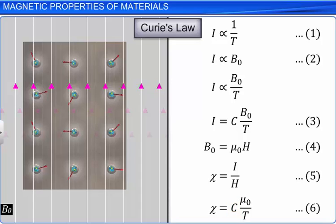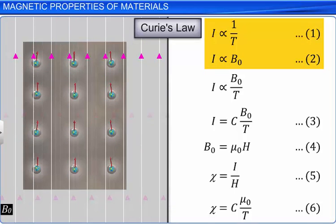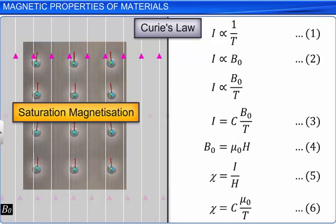Thus, the magnetic susceptibility chi depends on the nature and the temperature of the material. Since the magnetization of a material is directly proportional to the applied magnetic field induction and inversely proportional to its absolute temperature, the magnetization of a material increases up to a certain level by increasing the magnetic field and decreasing the temperature. At this magnetization, all the atomic dipoles are aligned in the same direction of the magnetic field. This value of magnetization is known as the saturation value and is represented as I_S. Beyond this value, Curie's Law is not applicable.